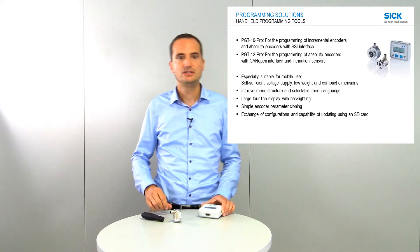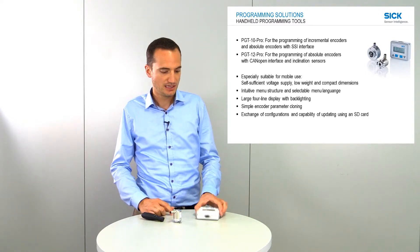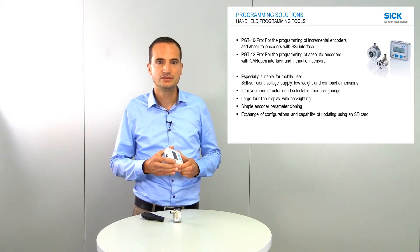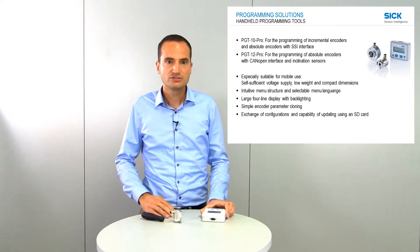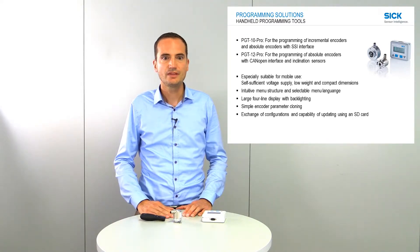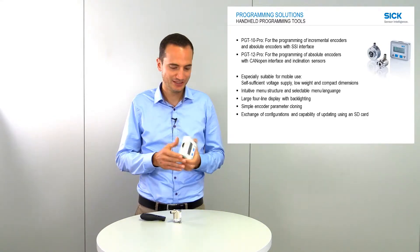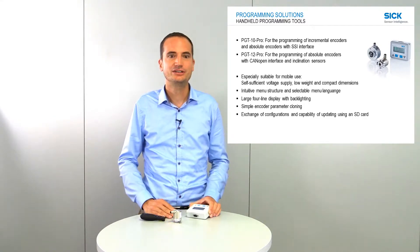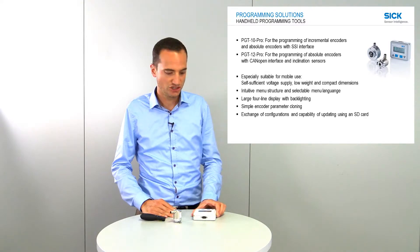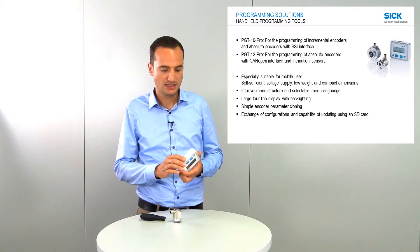Another advantage is that the handheld tool can easily be used in a mobile setting. It has a self-sufficient voltage supply, very low weight, and very compact dimensions. The menu structure is very intuitive and you can select different menu languages. There is a large four-line display with backlight for use when surroundings are dark. You can do simple encoder parameter cloning, exchange configurations, and perform firmware updates with an integrated SD card.